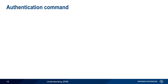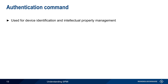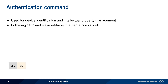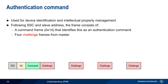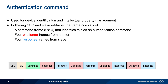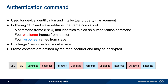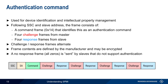SPMI also supports authentication, which can be used for device identification and intellectual property management. Following the start sequence condition and the slave address, a command frame with a fixed pattern is used to identify this as an authentication frame. There then follow four challenge frames from the master and four response frames from the slave, which alternate. The content of these frames is defined by the manufacturer and may be encrypted. Slaves that do not support authentication send the special all-zeros no-response frame.